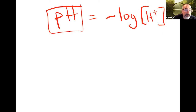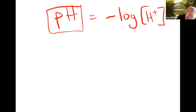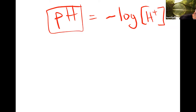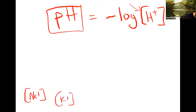H pluses don't really exist as independent H pluses — they become hydronium ions, and there are different versions of those. But for the quick and dirty chemistry we need for this class, we'll let H pluses exist. And whenever we have brackets, brackets just mean the molar concentration of whatever is inside — concentration of sodium, potassium ions, or whatever is in the solution.